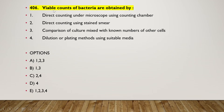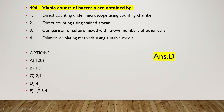Next question: viable count of bacteria are obtained by — (1) direct counting under microscope using counting chamber, (2) direct counting using stained smear, (3) comparison of culture mixed with known numbers of other cells, (4) dilution or plating method using suitable media. The right answer is option D — only option four is the correct answer.